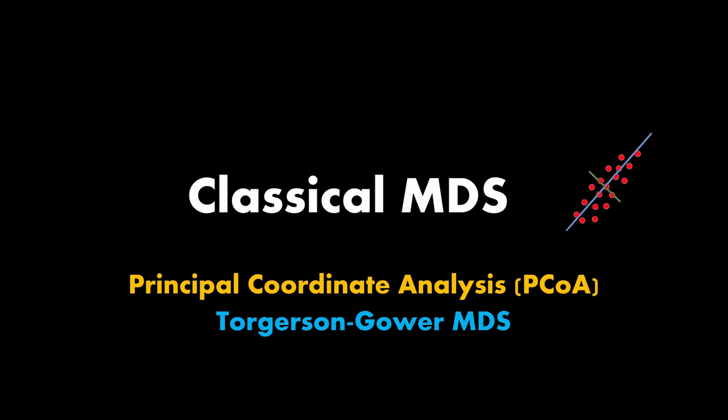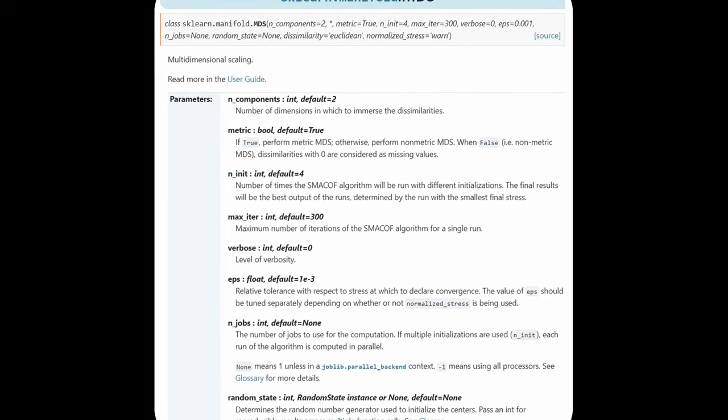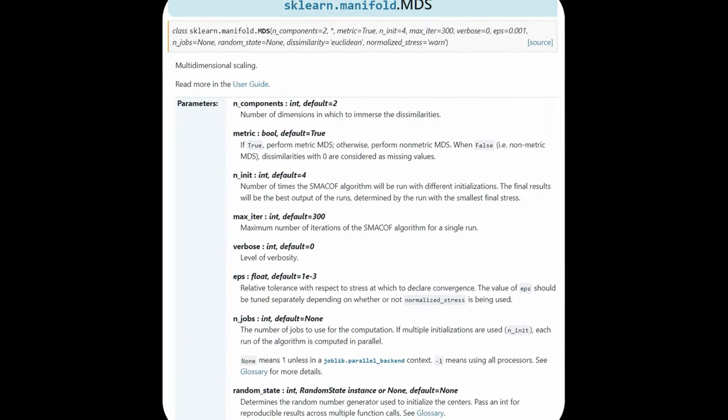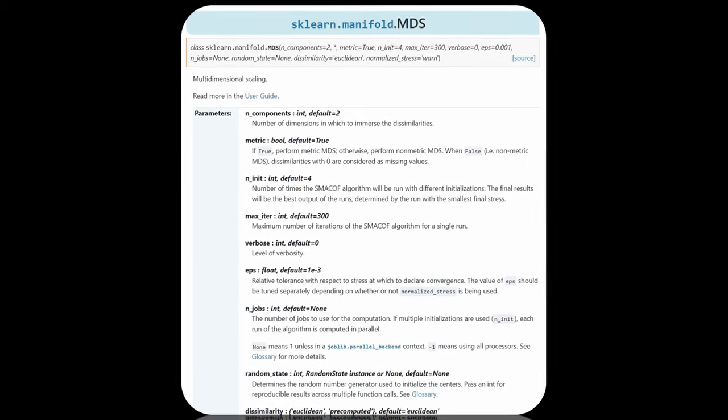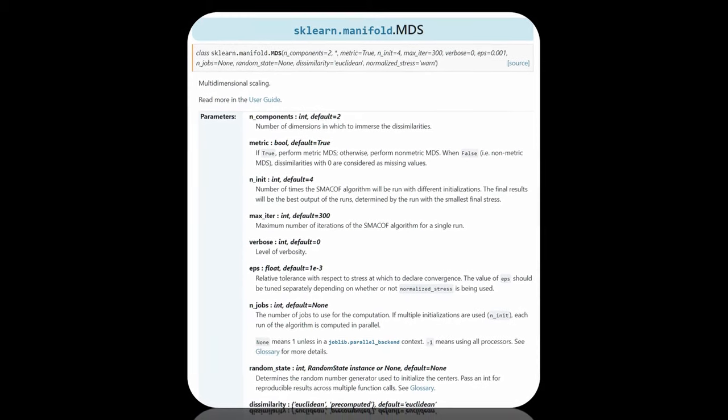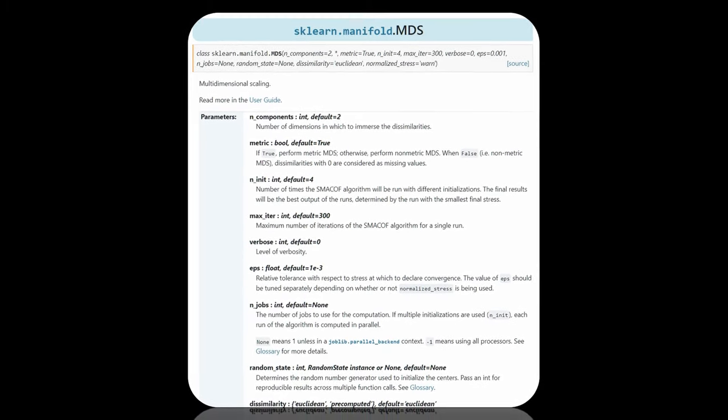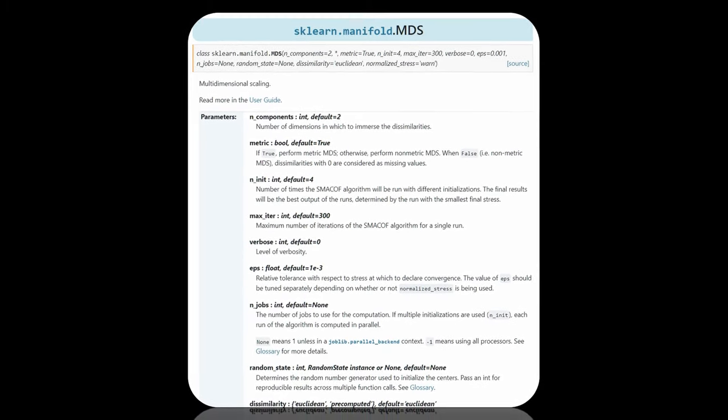Let's begin with the classical multidimensional scaling, which is also known as principal coordinate analysis or Torgerson-Gower MDS. To fully understand this first method, it's recommended to watch the previous PCA video, as there will be some overlaps. Just one note, if you want to learn what is happening under the hood when using the good old scikit-learn MDS implementation, feel free to skip to the metric MDS part. Instead of the classical decomposition approach explained in the next minutes, metric MDS uses an iterative algorithm.